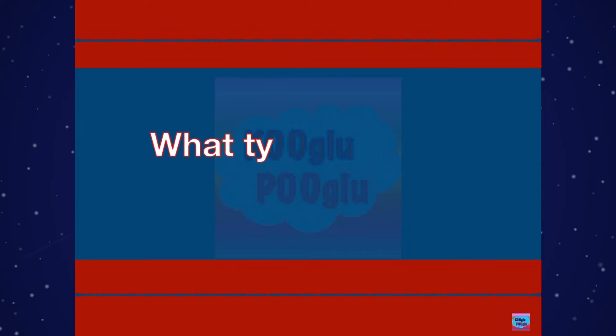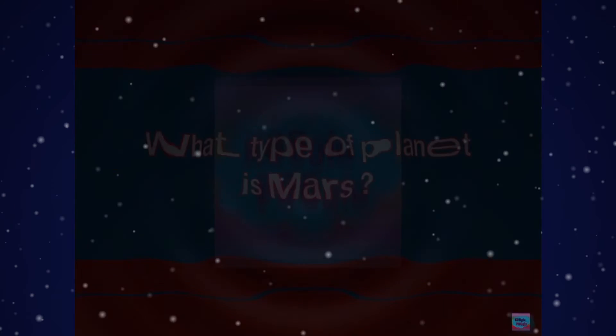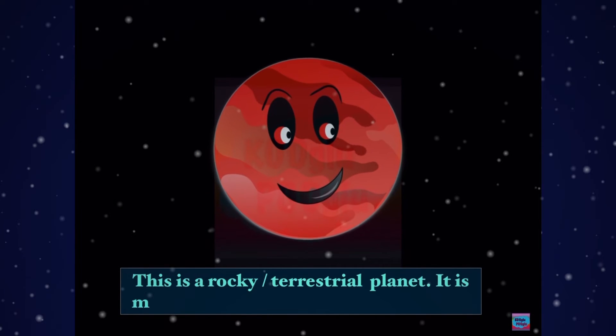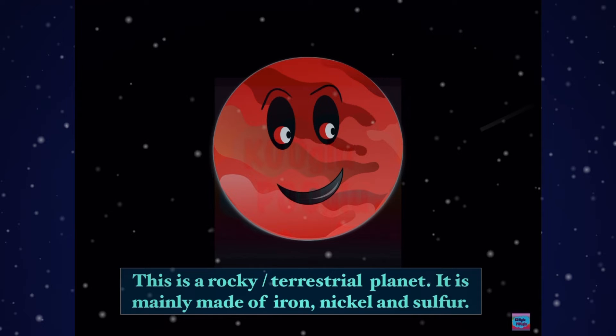What type of planet is Mars? This is a rocky or terrestrial planet. It is mainly made of iron, nickel, and sulfur.